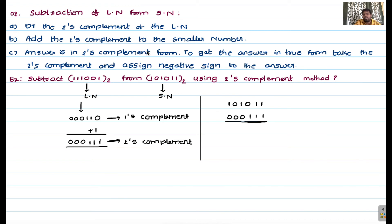Example: subtract 11001 base 2 from 10101 base 2 using the two's complement method. Identify the larger and smaller numbers — this is the larger number and this is the smaller number. Determine the two's complement of the larger number: first find one's complement, then add plus 1 to get the two's complement. Now add this two's complement number to the smaller number.